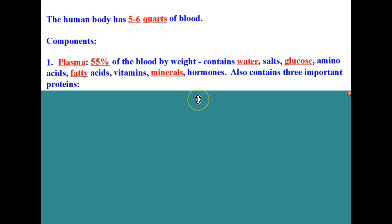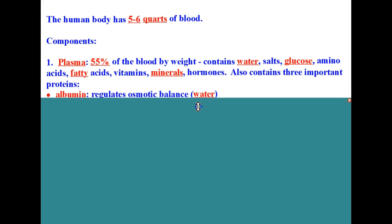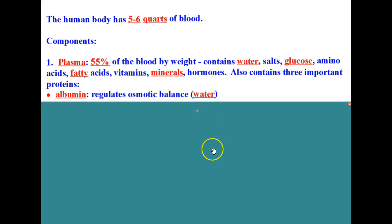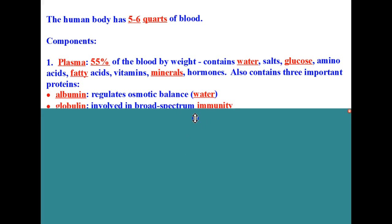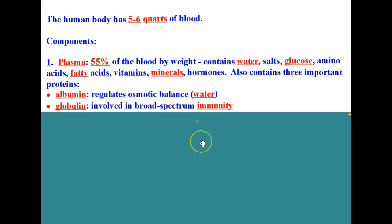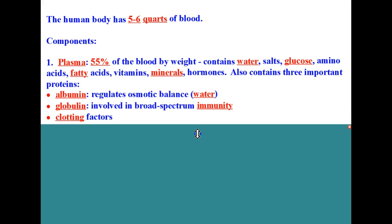Plasma also contains three important proteins. Albumin regulates osmotic balance — you remember osmotic from osmosis — so that maintains water balance. Globulin is involved in a broad spectrum of immunity and clotting factors. Plasma is the liquid that makes up your blood.